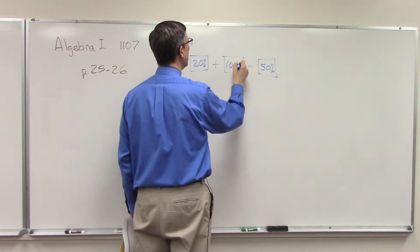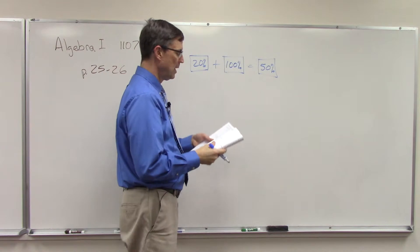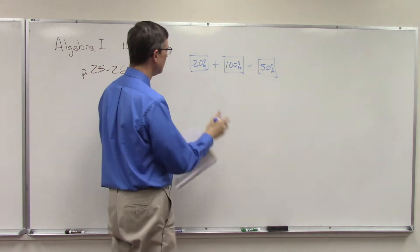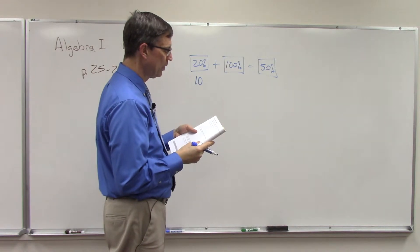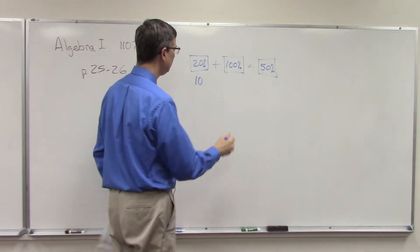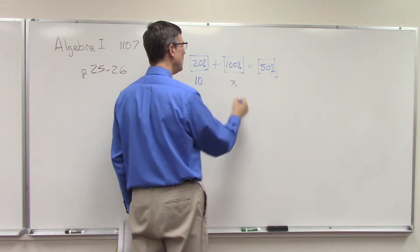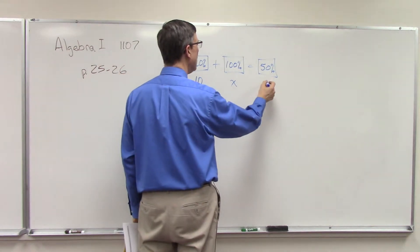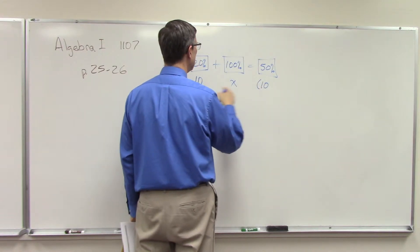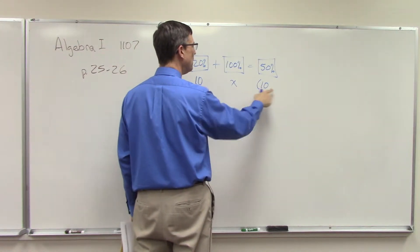It tells us we're starting with 10 liters, so I like to put that right underneath. We don't know how much we're adding, so we'll call that x. But we're going to end up with, guess what, if I added five liters here I'm going to end up with 15.